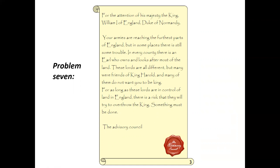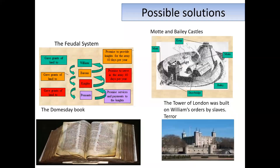Over the last few weeks you've been looking at various methods that William used to control the country. Some possible solutions — and I'm not going to tell you which solutions solve which problems, that's for you to work out: the feudal system, the Domesday Book, the motte and bailey castle, and the Tower of London. Think about which problems each might solve — keyword London there, think back to which problem mentioned London.